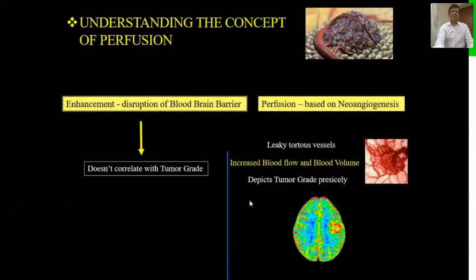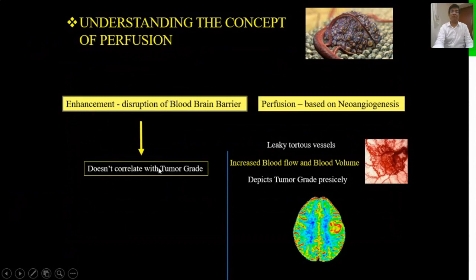How does MR perfusion work? We must understand the concept of perfusion and how it differs from simple enhancement on non-perfusion imaging. Simple enhancement, traditionally used for over 30 years, indicates only disruption of the blood-brain barrier at the tumor and its margins — it does not necessarily correlate with tumor grade. MR perfusion is based on neoangiogenesis. It assesses the number and severity of leaky, tortuous vessels in the tumor, which is associated with increased blood flow, increased blood volume, and depicts tumor grading based on neovasculariy.